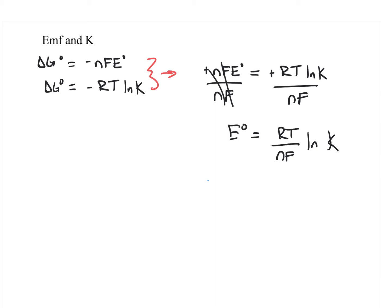Now we have a formula that relates the equilibrium constant and the cell potential. This formula is not on the formula sheet, but the two individual equations are, so you can substitute them and set them equal to each other to solve for cell potential if you have K, or solve for K if you have the cell potential. To isolate K, rearrange so that K equals e raised to the power of E times N times F over RT. Remember, R must be in joules — that is 8.314 joules per mole Kelvin — and then you can solve for K.